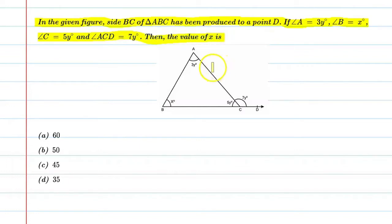So basically what does this question mean? You have a triangle ABC, and in this ABC you have produced this line BC to point D. And here angle A value is 3Y, angle B value is X, angle C, the inside angle ACB, is 5Y, and angle ACD, that is the exterior angle, is equal to 7Y. So the question is asking us to find the value of X.